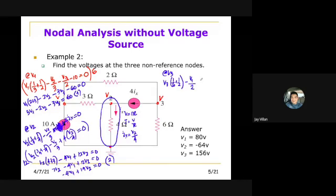At this node, current 4IX is leaving, so that becomes minus. Wait, I made a mistake. This should be minus 10 entering. So this should be minus. And this should be minus 2. And therefore this should be minus. And this should be minus. So 7 minus 12, this becomes minus 5. So minus 5, that is our equation 2. So at V1, current is leaving the node, so that becomes plus 4IX is equal to 0.